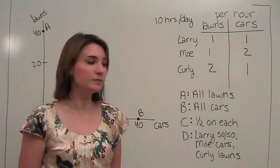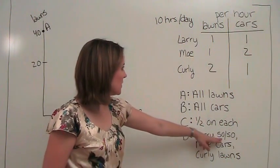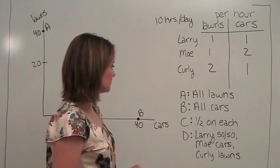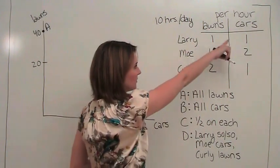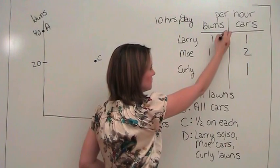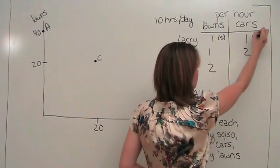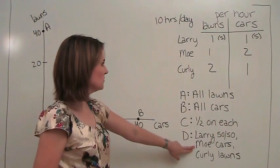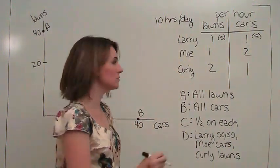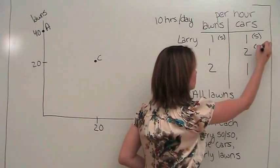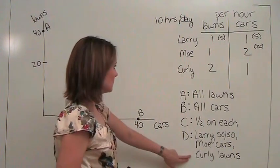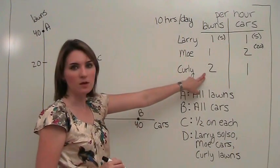What do we get then? Larry would give us five lawns and five cars. Moe would give us twenty cars. Curly would give us twenty lawns.